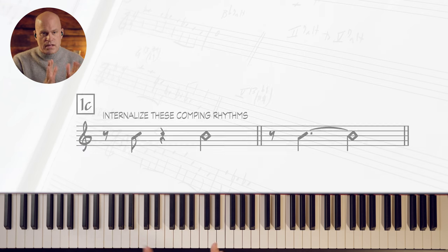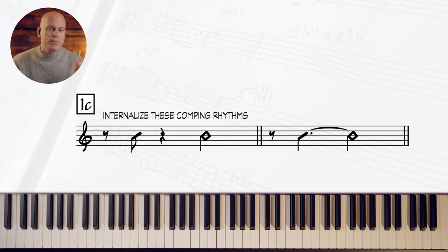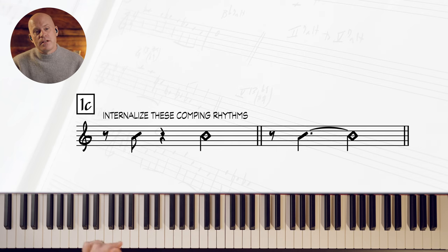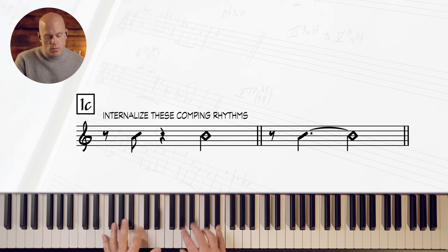So what you want to internalize here is what's going on rhythmically. There's a rhythmic concept of an offbeat eighth note followed by a half note. One, two, three, four. And then there's also a concept of the and of one. One, two, three, four.